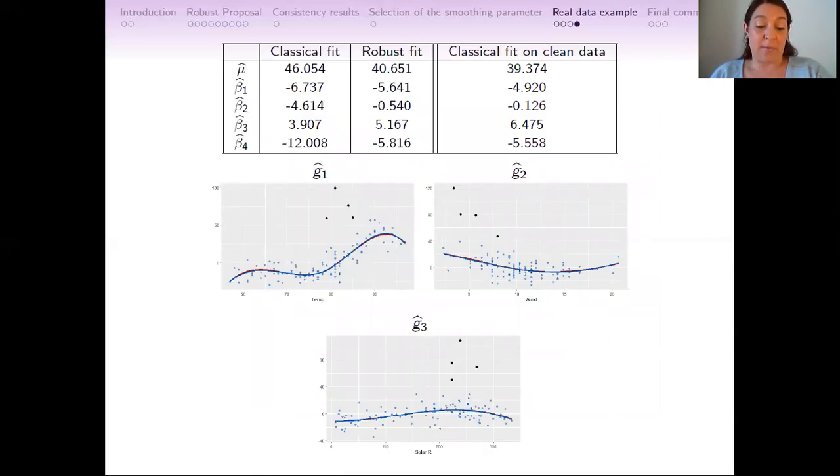This table contains the estimations of the parameters μ and vector β. The first two columns correspond to the classical and robust fits using the complete dataset, that is, with 111 observations. But the third column corresponds to the estimated parameters by the classical fit without these four observations. Besides, the plots contain the robust fit and its partial residuals as before, and in red lines, the new estimated curves with the classical fit but without these four observations. And it can be appreciated that not only the curves are very similar, that's why they are very difficult to distinguish one from another, but also the estimated parameters are very similar too.